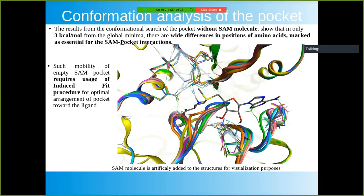Results from the search of the pocket without the SAM molecule showed that within only 3 kcal/mol from the global minimum, there are wide differences in the positions of amino acids essential for SAM-pocket interaction. Such mobility of the empty SAM pocket requires usage of an induced fit procedure for optimal arrangement of the pocket toward the ligand. This can be seen in the picture — the SAM molecule is placed just as a reference after the conformational changes.